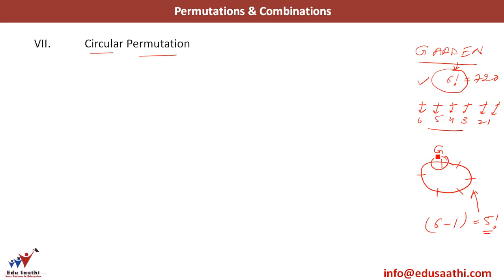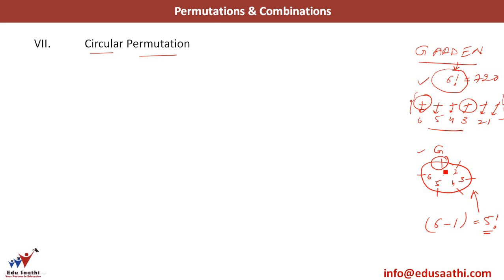I cannot name the point where I have placed G unless I number these chairs as 1, 2, 3, 4, 5, and 6. Until I do this, I cannot really tell where I have placed G. Whereas when I arrange these letters in a line, I can always say that I have placed G in the leftmost place, or 4th place from the left. In a line, I always have an origin — the directions. In a circle, I do not have an origin. Without numbers, you will never be able to tell me where I have placed G.